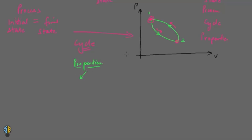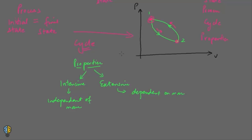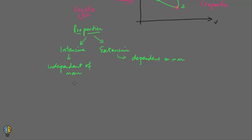The properties are of two types. The first type of property is intensive property. Intensive properties are those properties which are independent of the mass of the system. Examples of intensive properties are pressure and temperature, as these two properties are not dependent upon the mass of the system.